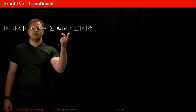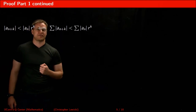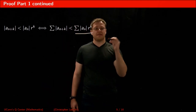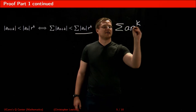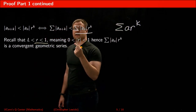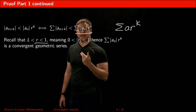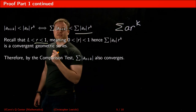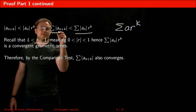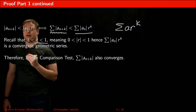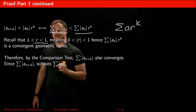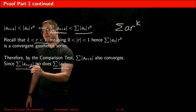Since this inequality holds true for these two sequences, it also holds for the series corresponding to those sequences. This series is in the form of a geometric series. Because r is less than 1, the absolute value of r is between 0 and 1, which means the geometric series converges. We can use the comparison test to say that because the greater series converges, the smaller series also converges. If the series of absolute value of a(n+k) converges, so does the series of absolute value of a(n), since it is just the former series missing a few terms.